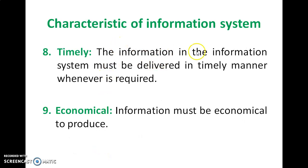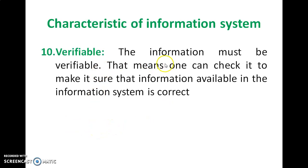The information available in the system must be delivered in a timely manner wherever it is required, and it must be economical to produce. The information must be verifiable — one can check it to make sure that the information available in that system is correct. These are the 10 characteristics of your information system.